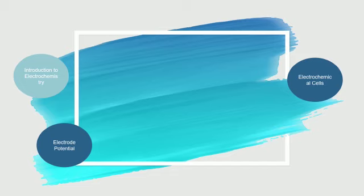The first type is electrolytic cells and the second is galvanic or voltaic cells. In electrolytic cells we provide electrical energy which is converted to chemical energy. In galvanic cells it is a spontaneous process, because of the internal chemical reaction — chemical energy is generated by chemical reaction.